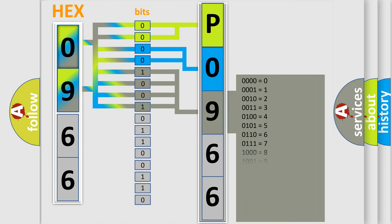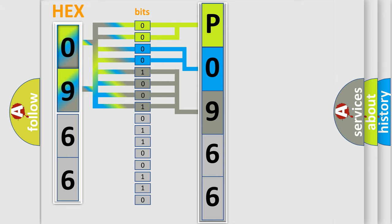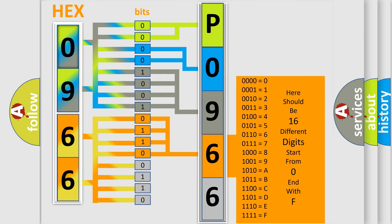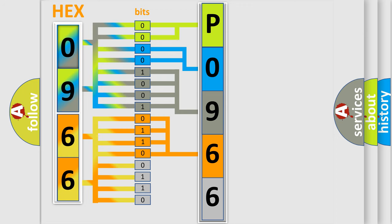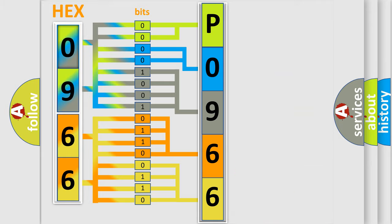The second byte is composed of a combination of eight bits. The first four bits determine the fourth character of the code, and the combination of the last four bits defines the fifth character. A single byte conceals 256 possible combinations.